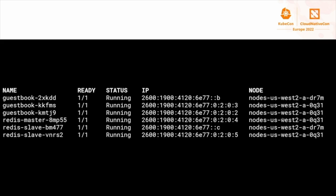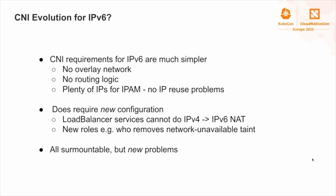Here's a quick screenshot showing the classic guestbook example running with IPv6 pod IPs across a few different nodes. These are in the 2600 range, so these are fully routable IPv6 IP addresses. The gotcha is that not everything quite works when it comes to networking. The IPv4 Kubernetes networking stack is pretty complicated, but for IPv6 we need much less — no overlay, no routing logic, and IPAM is pretty simple now. There are plenty of IP addresses, we don't have IP reuse problems, and we generally don't need to worry about running out of address space.